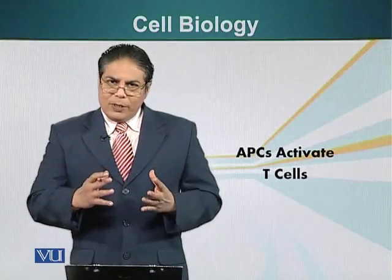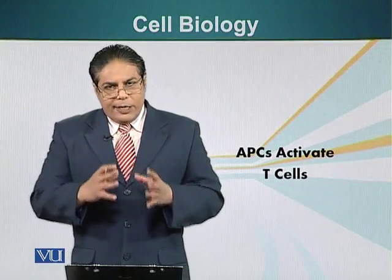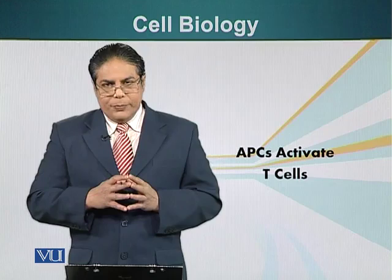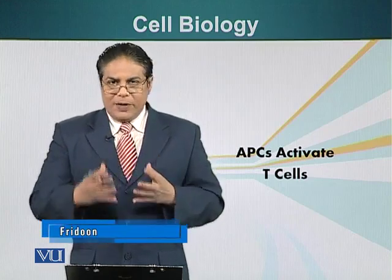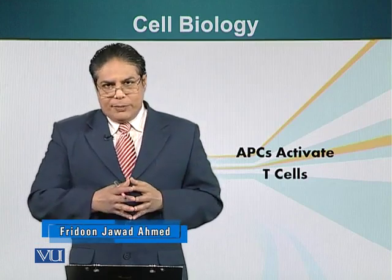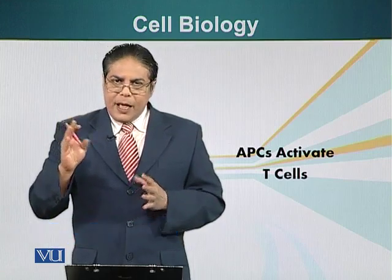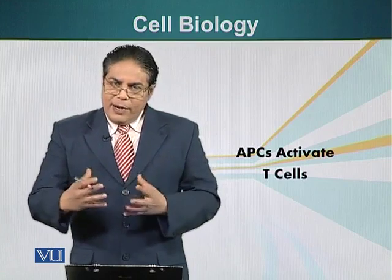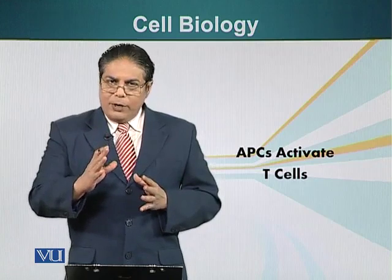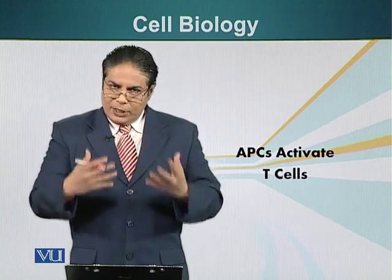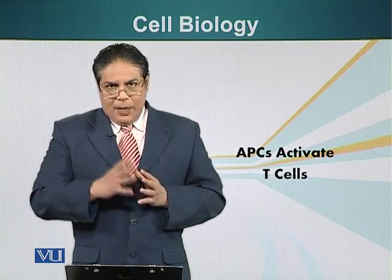We have talked about T cells and T cell receptors. Now let's see how these cells are activated. The adaptive immune system gets activated by the innate immune system. T cells and B cells are activated directly or indirectly by the innate immune system, and the important component of the innate immune system which activates the adaptive immune system is the dendritic cell.